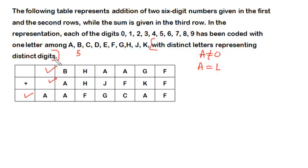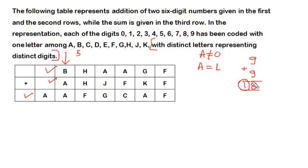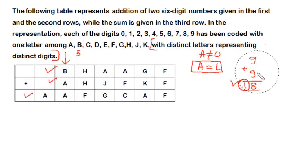Why must A be one? Because in the addition of this particular column, B plus A gives A plus some carry. If we add any two single-digit numbers, the maximum carry forward can only be one. So B plus A gives us A and the carry forward becomes A — meaning the carry is A itself. That means A has to be one, and we have identified the answer to question one.